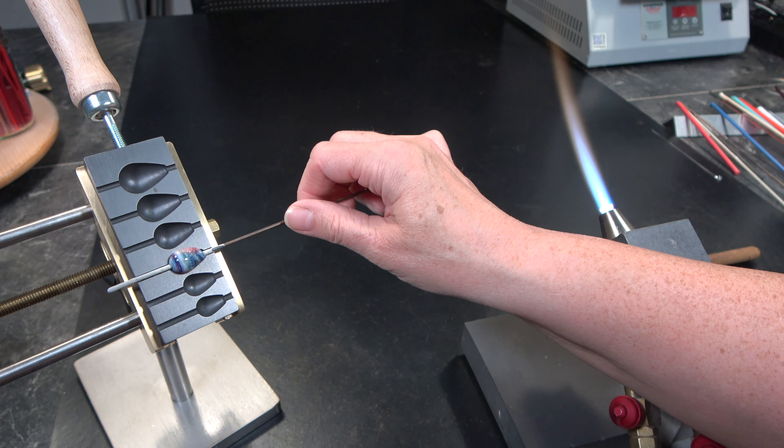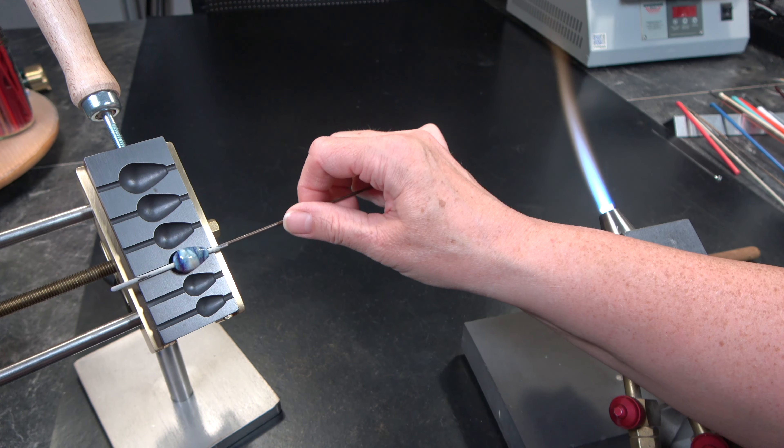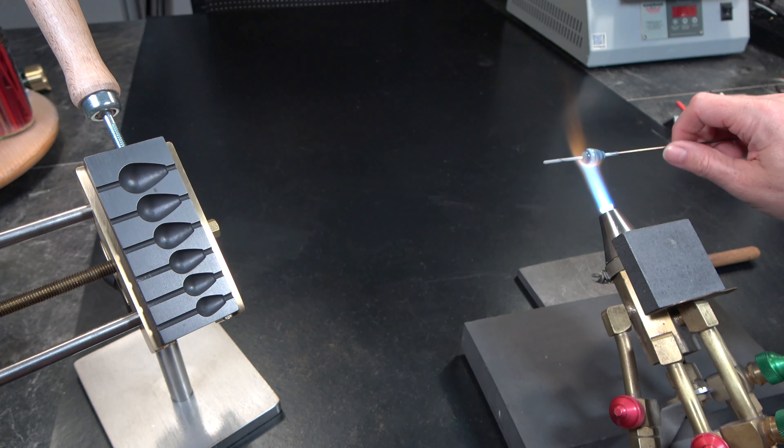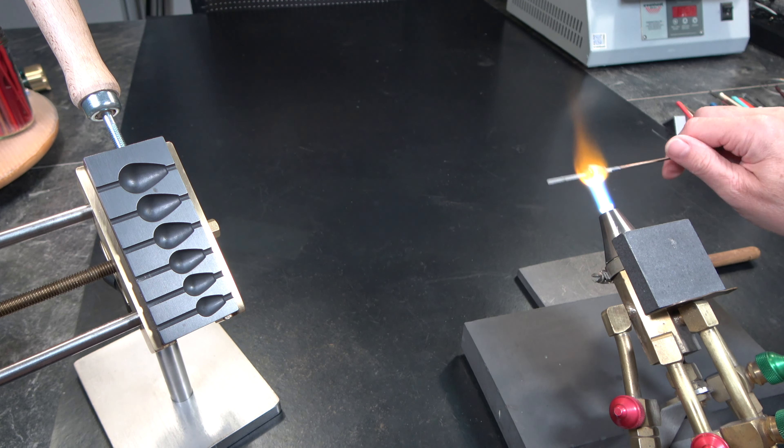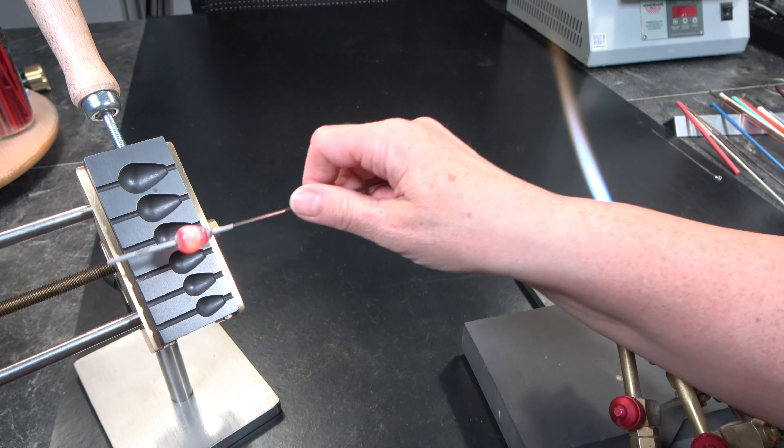After warming up the mandrel I can now roll it through the mould. If I feel any resistance I pull the bead out of the bead roller and heat it up again. I repeat this process until the bead is done.